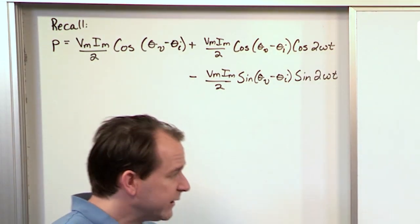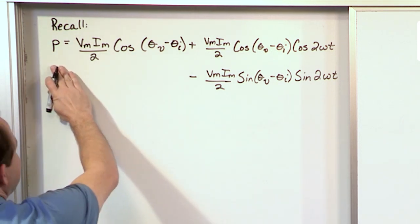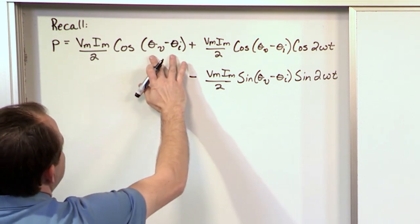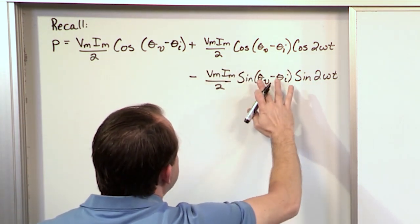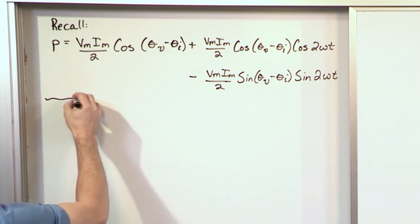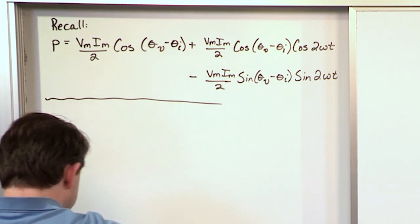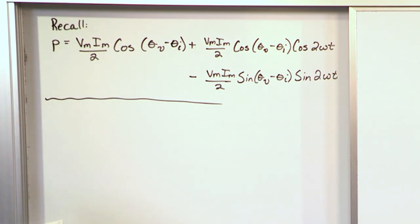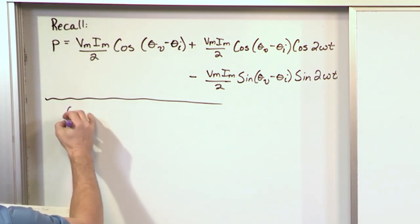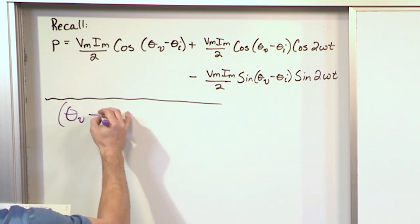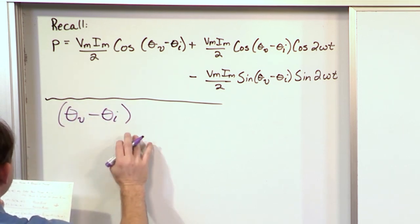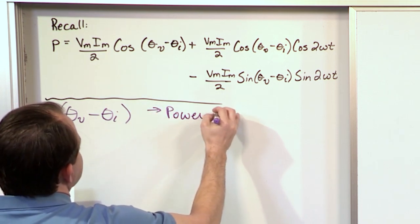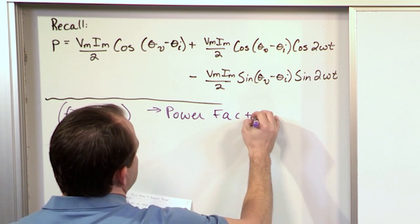In this enormous equation we've been studying, it seems that the most important part is this phase angle difference, theta V minus theta I — it's popping up everywhere. This concept is so important that we actually have a special name for it. We call this angle theta V minus theta I the power factor angle.